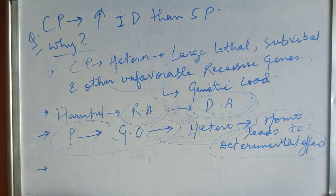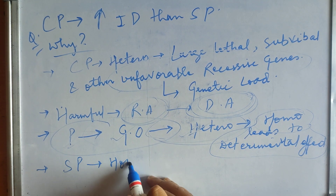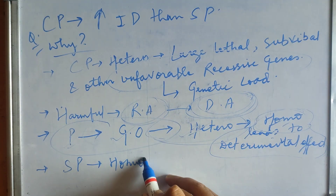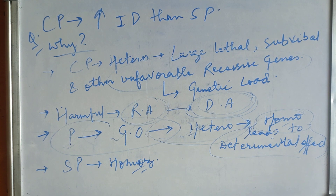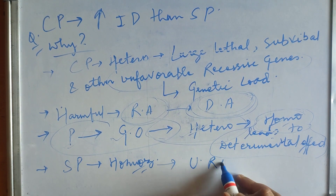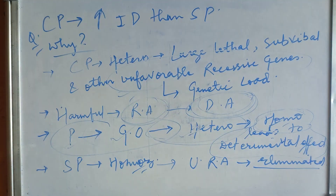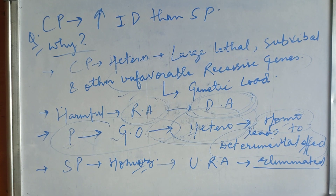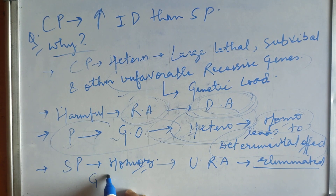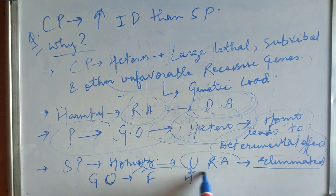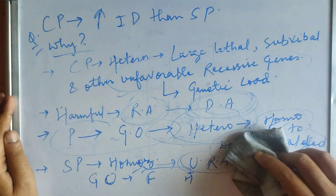In contrast, self-pollinated species are naturally homozygous. They don't need to become homozygous through inbreeding — they already are. As a result, unfavorable recessive genes become homozygous and are eliminated from the population over time. In self-pollinated species, the gene combinations that are favorable are those which show no injurious effect in the homozygous state.